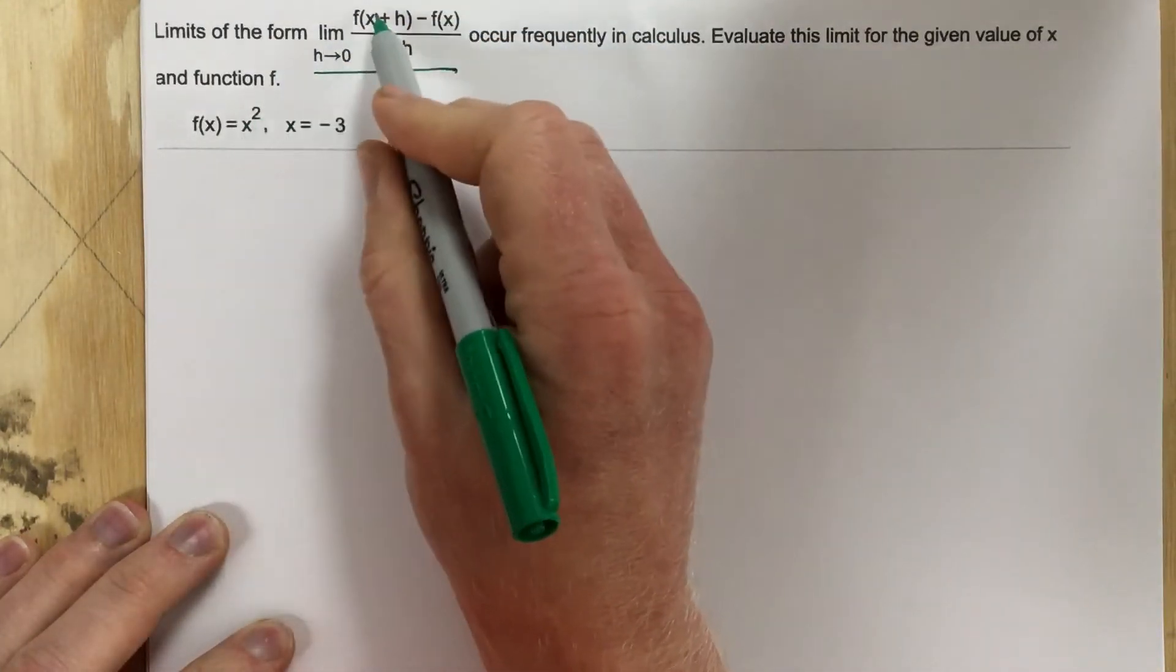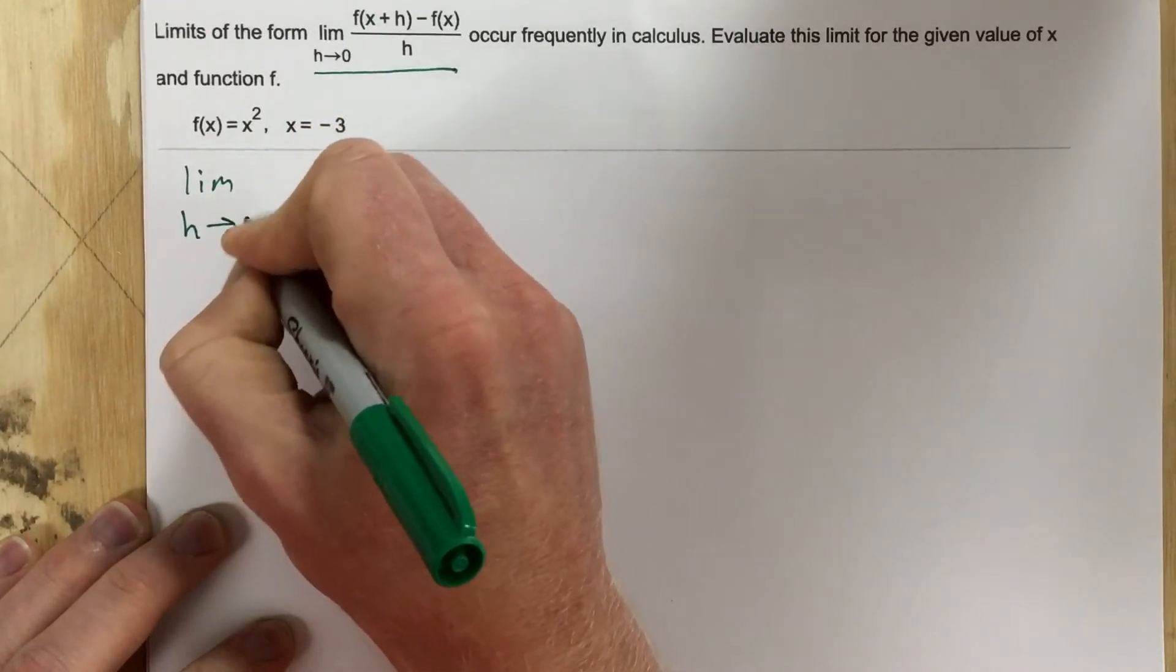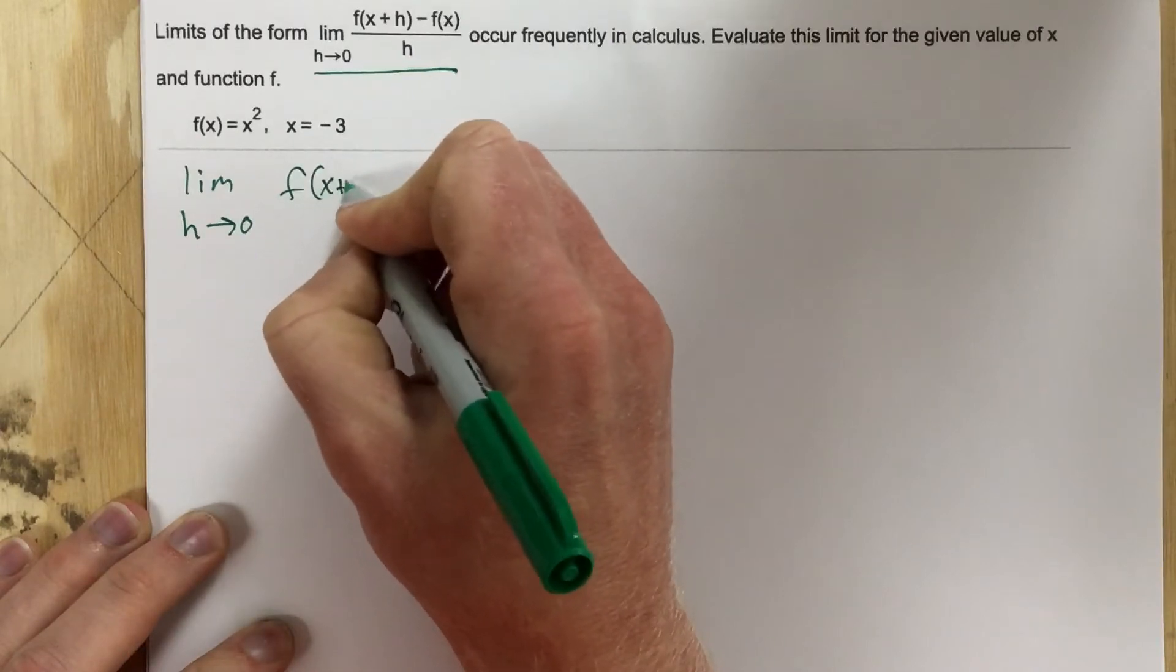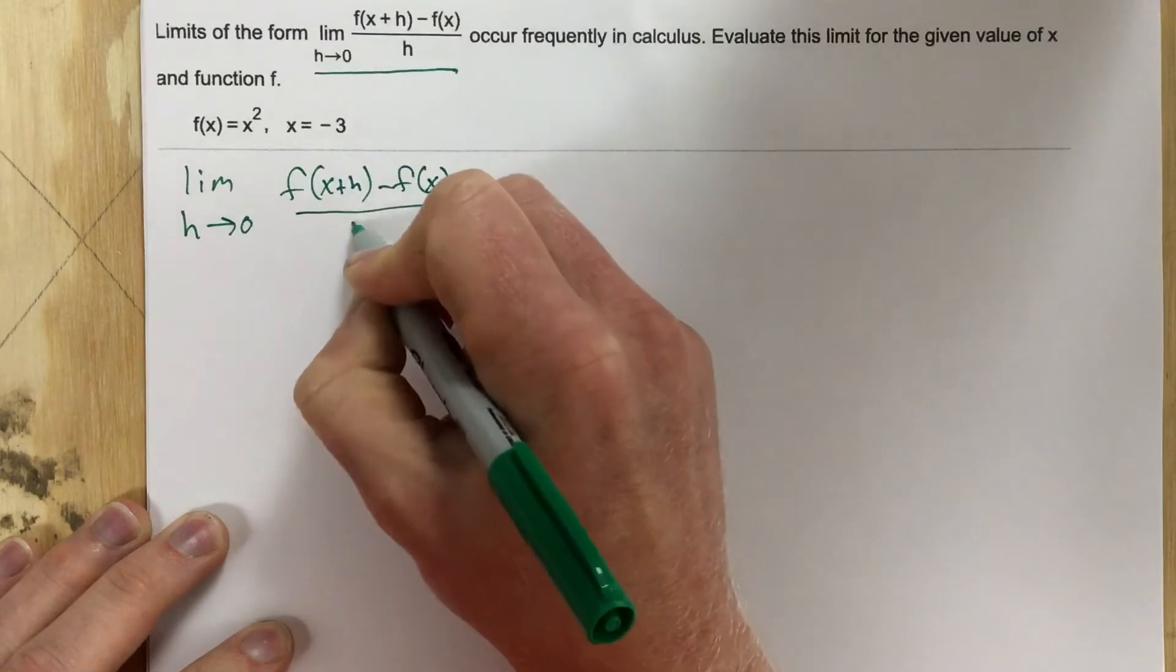Let's start by taking and using the equation, so limit as h approaches 0 of f of x plus h minus f of x all over h, and we'll start by plugging in our function.